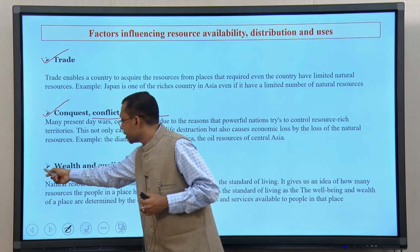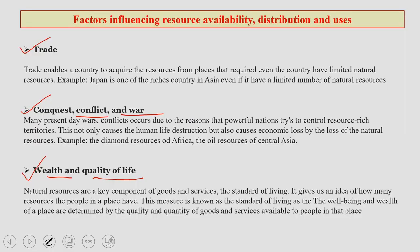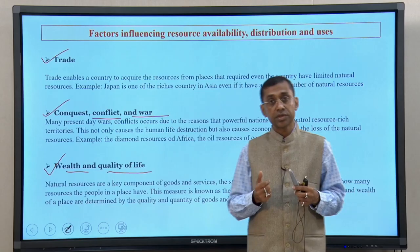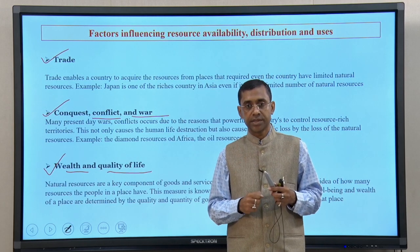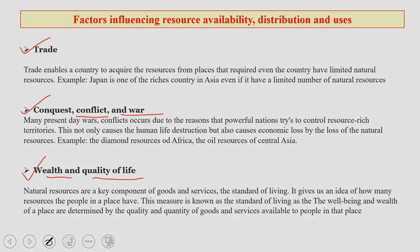The next point is wealth and quality of life. Wealth and quality of life are also associated with the optimum amount of natural resources available to mankind. Natural resources are a key component of all kinds of goods and services, and standard of living — you cannot think of your life without the important role played by natural resources.